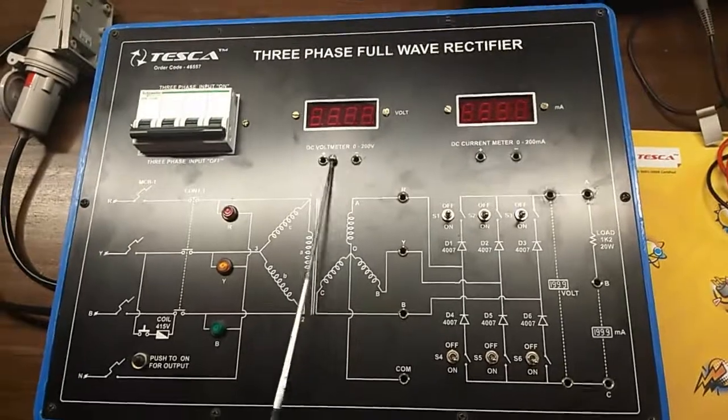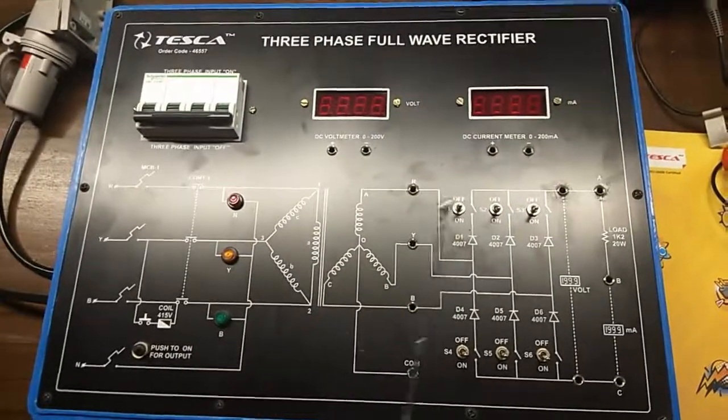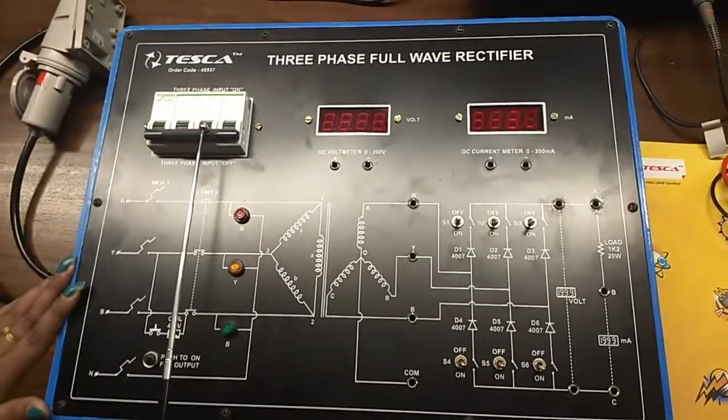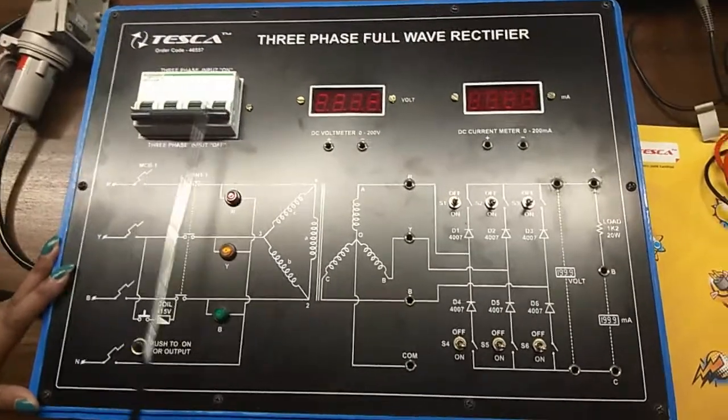This is the DPM for DC volt meter and DC current meter. This is the NCB to turn on or off the kit.